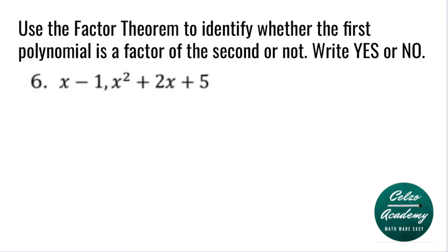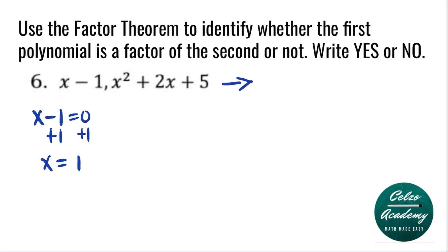Question number 6. Our first polynomial is x minus 1, so we will solve first for x. Adding 1 to both sides, our x value is equal to 1. To determine if x minus 1 is a factor, we will plug in 1 into x squared plus 2x plus 5.